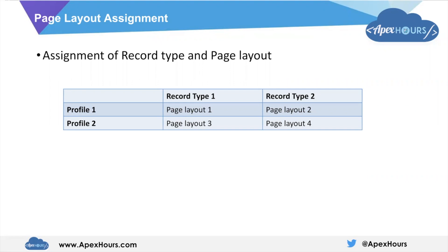The purpose of creating a record type is to distinguish records within the same object. Since the properties are different for each type of record, there are good chances the fields visible on the detail page will also be different. If that's not the case in your use case, then do not create a different page layout.